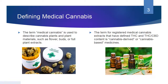The term medical cannabis is used to describe cannabis plants and plant material such as flower buds or full plant extracts. The term for registered medical cannabis extracts that have defined THC and CBD content is cannabis-derived or cannabis-based medicines. This is a very specific perspective because as you read research studies, you're going to have to know the terminology so that you understand the difference between medical cannabis and cannabis-derived.